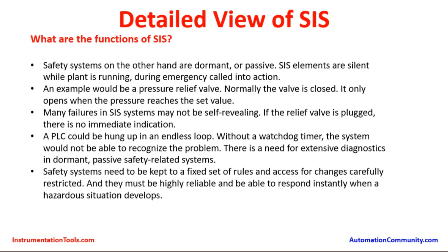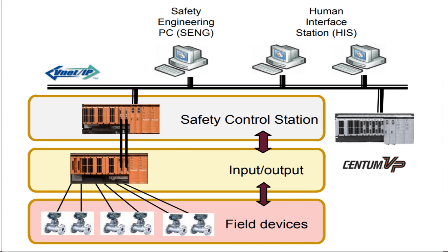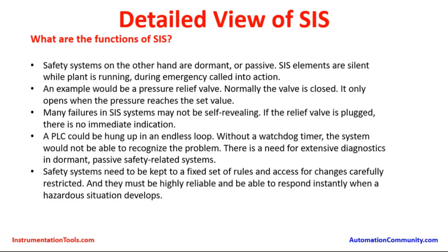An example would be a pressure relief valve. Normally the valve is closed; it only opens when the pressure reaches a set value. This is another layer of protection. Many failures in these systems may not be self-revealing. If the relief valve is plugged, there is no immediate indication. If the PLC is hung up in an endless loop, without a watchdog timer the system would not be able to recognize the problem. There is a need for extensive diagnostics in dormant passive safety systems. Since the control system is not dynamically acting during steady state, it is known as a dormant system.